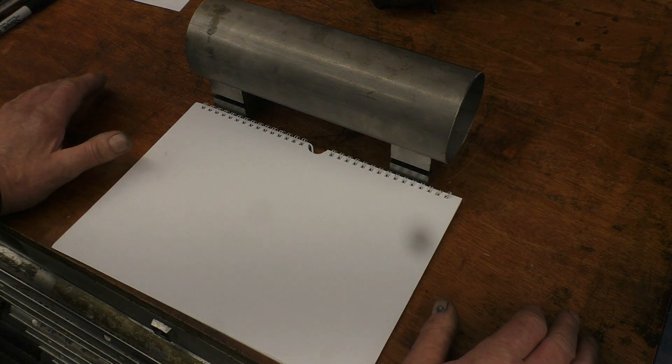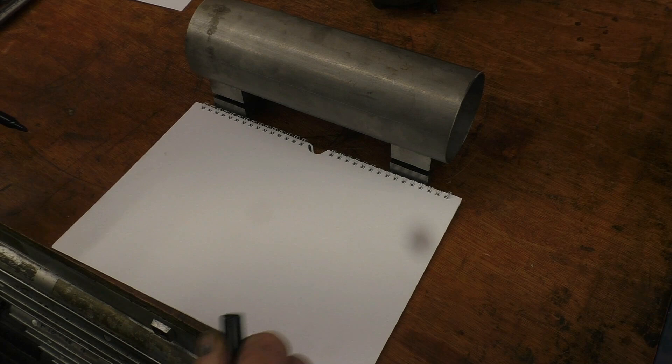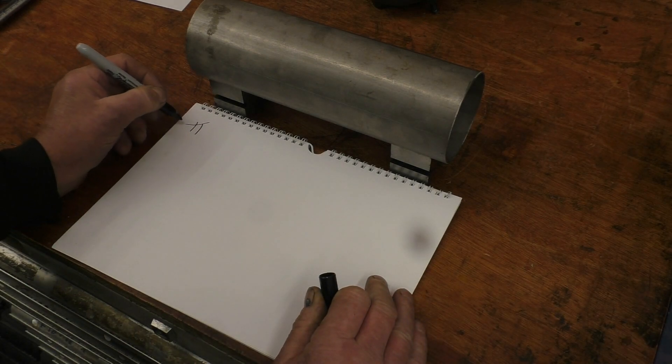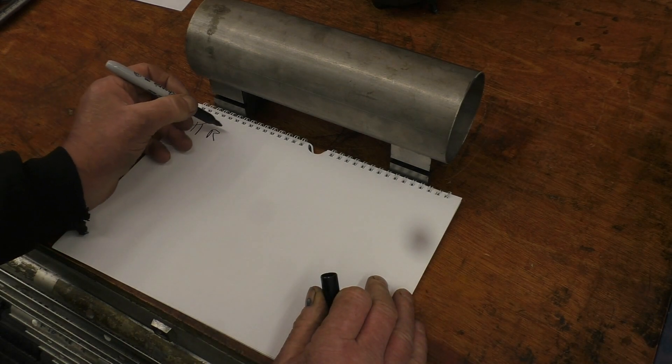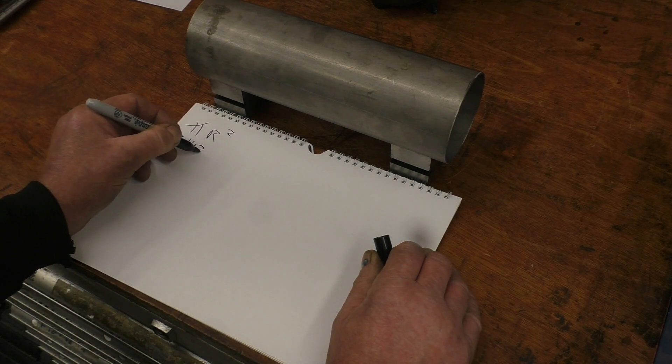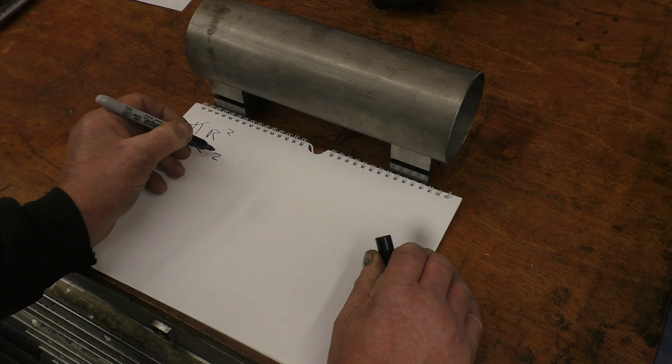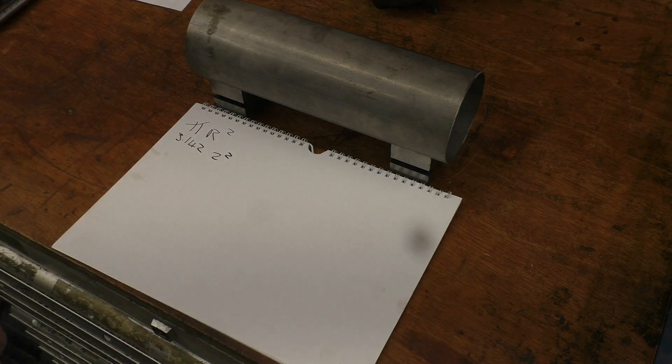The first thing we need to work out is the area of the turbocharger inlet or the inducer. To work out the area from school, it's π times radius squared.